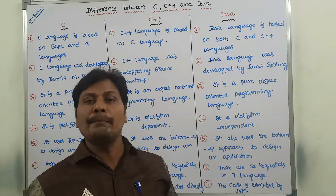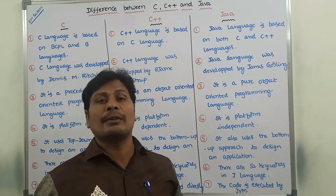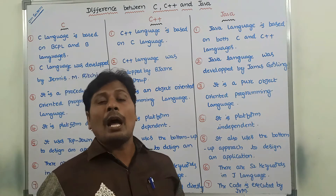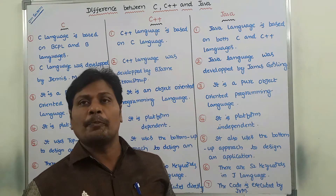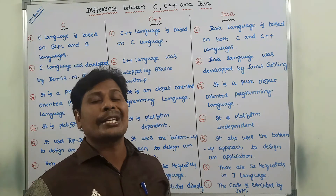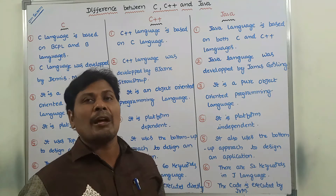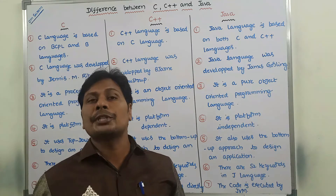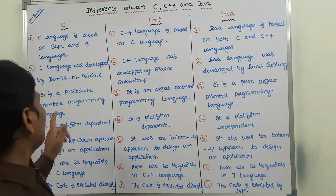C language was developed by Dennis M. Ritchie, whereas C++ language was developed by Bjarne Stroustrup, and Java language was developed by James Gosling. So we can say that the father of C language is Dennis M. Ritchie, the father of C++ language is Bjarne Stroustrup, and the father of Java language is James Gosling.